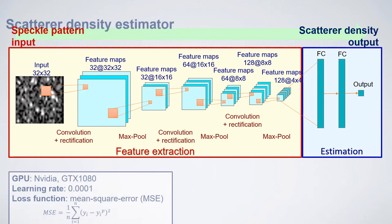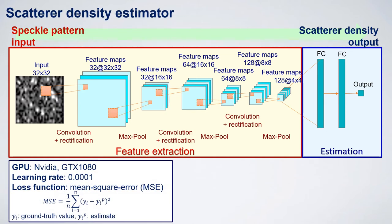Our training process was performed with an NVIDIA GTX 1080 GPU, and each training epoch took around 4 minutes. The learning rate was set to 0.001 and the mean squared error was used as the loss function. Training was completed at 37 epochs and took around two and a half hours.